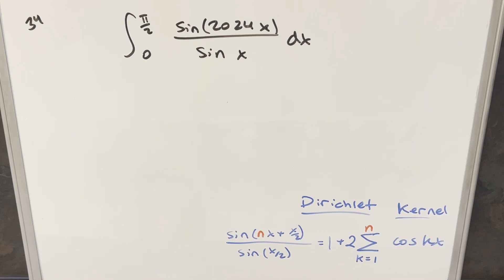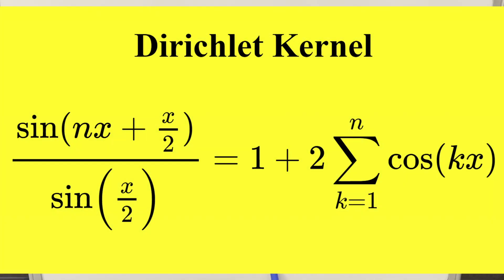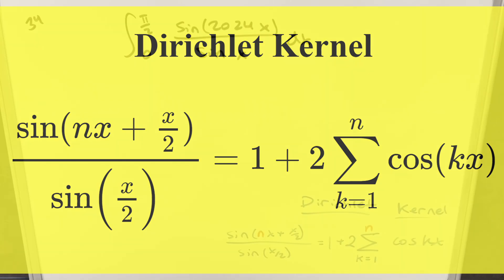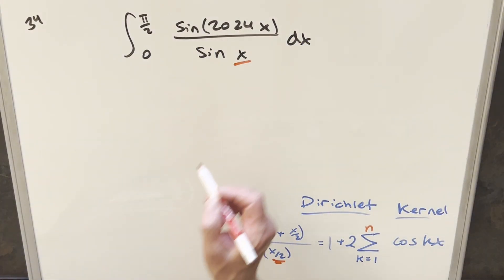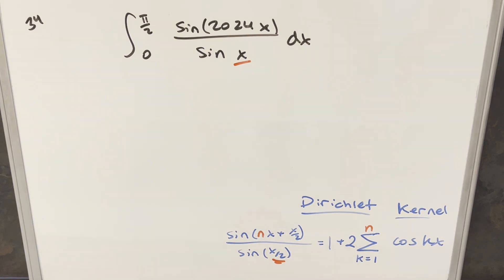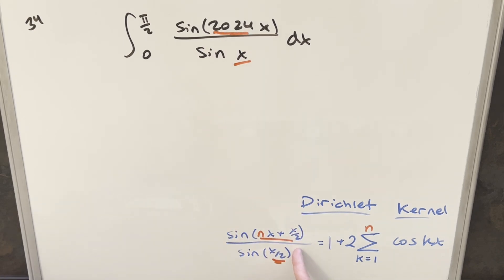I actually know a few different ways to do this, and I might do another video later. But for this video I couldn't help but notice the similarity between what we have right here and our formula down here for the Dirichlet kernel. We are going to run into a little bit of trouble because here in the denominator the angle is x over 2, and here we just have an x. And also when we go to split this up, we want an odd coefficient in order for this to work nicely.